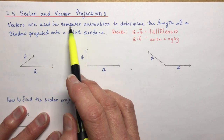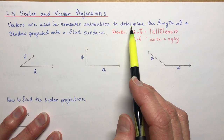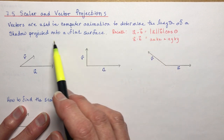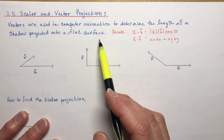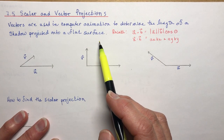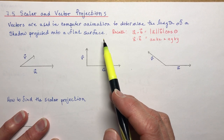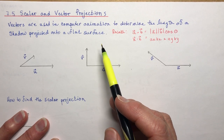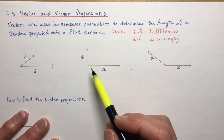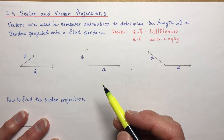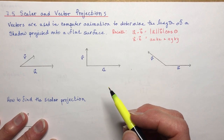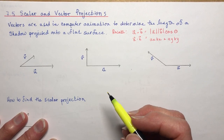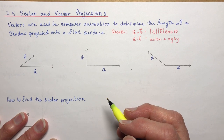Vectors are used in computer animation to determine the length of a shadow projected onto a flat surface. I know this for a fact because I have a daughter in the special effects business out in Vancouver, and she said 'Mom, we use vectors and vector projections all the time.' So happy to know that there is an actual application for this.